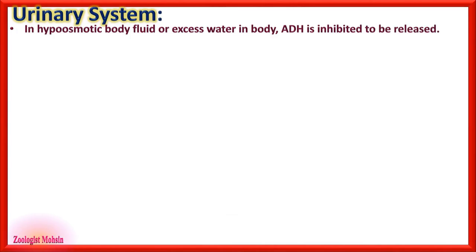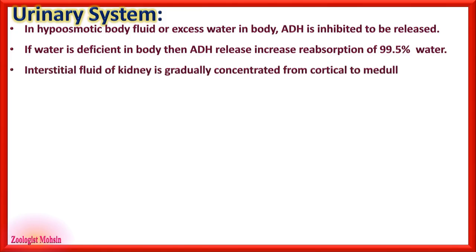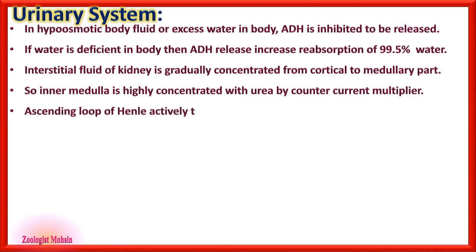In hypo-osmotic body fluid or when water is in excess, anti-diuretic hormone (ADH) is inhibited. When water is deficient, ADH release increases reabsorption of almost 99.5% of water, producing almost no urine. Interstitial fluid of the kidney is gradually concentrated from the cortical toward the medullary part, so juxtamedullary nephrons produce more concentrated urine. The inner medulla is highly concentrated with urea by the counter-current multiplier.